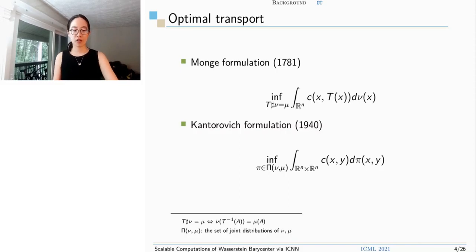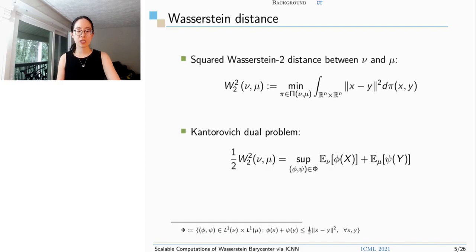And in 1940, the Soviet mathematician Kantorovich develops a more general and practical formulation. Instead of seeking for a Monge map, it seeks for an optimal joint distribution between marginal nu and mu to minimize the transport cost. And if we specify the cost to be the square of Euclidean distance, Kantorovich formulation is exactly the squared Wasserstein 2 distance.